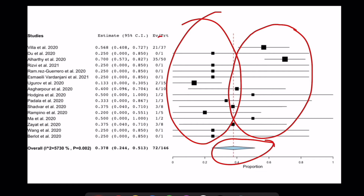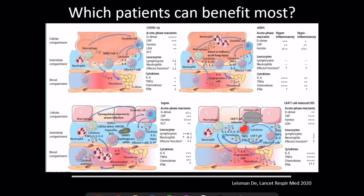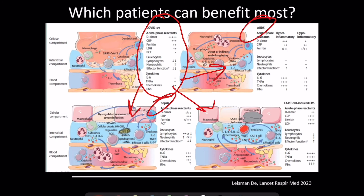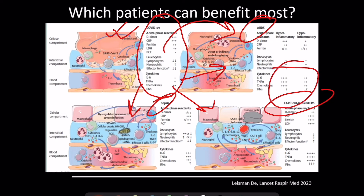We need to identify which patients are more likely to benefit. COVID-19 per se is not very similar to any known cytokine storm — not classic ARDS, sepsis, or CAR-T-induced CRS. However, COVID-19 can progress over its course into a severe ARDS-like stage where all these parameters are also elevated, so we need to understand at which point and in which patient we should intervene with these therapies.